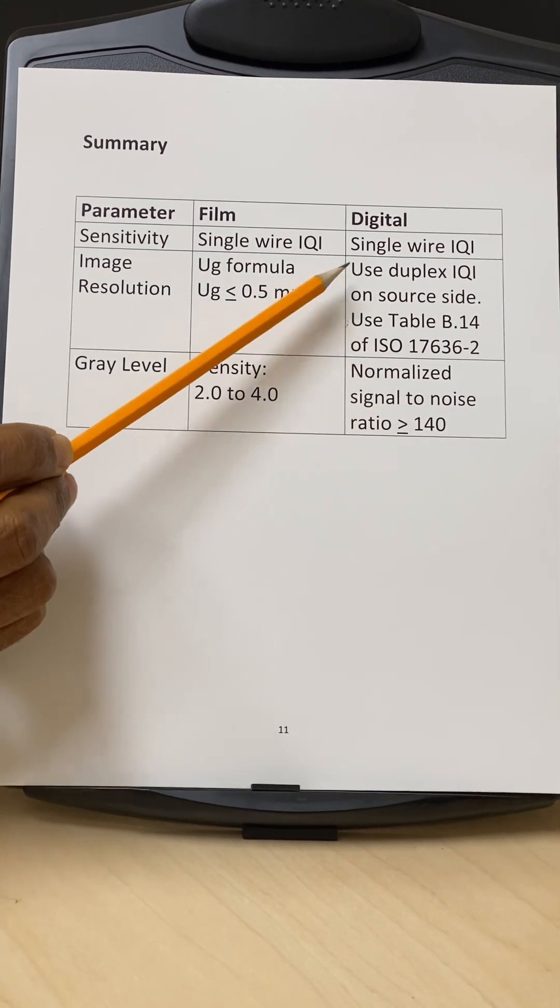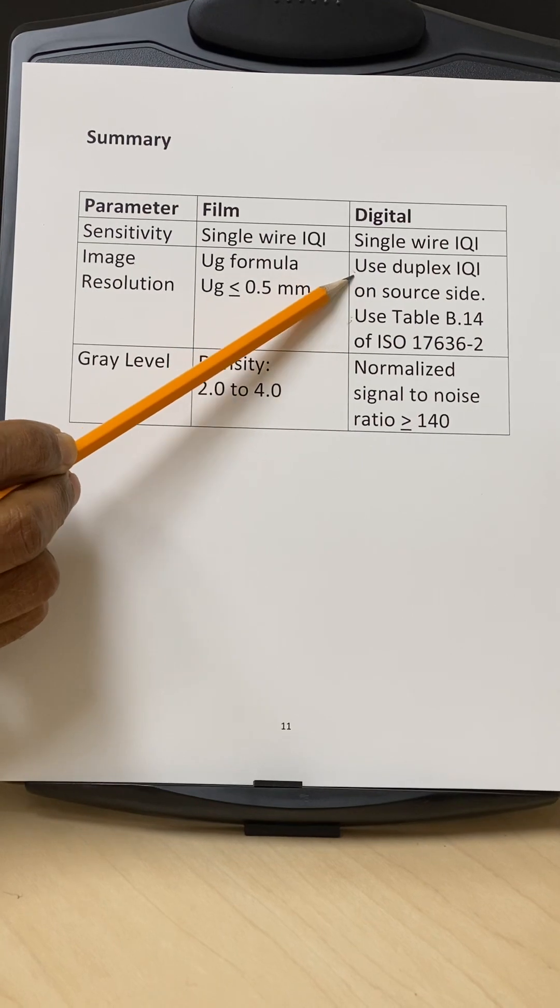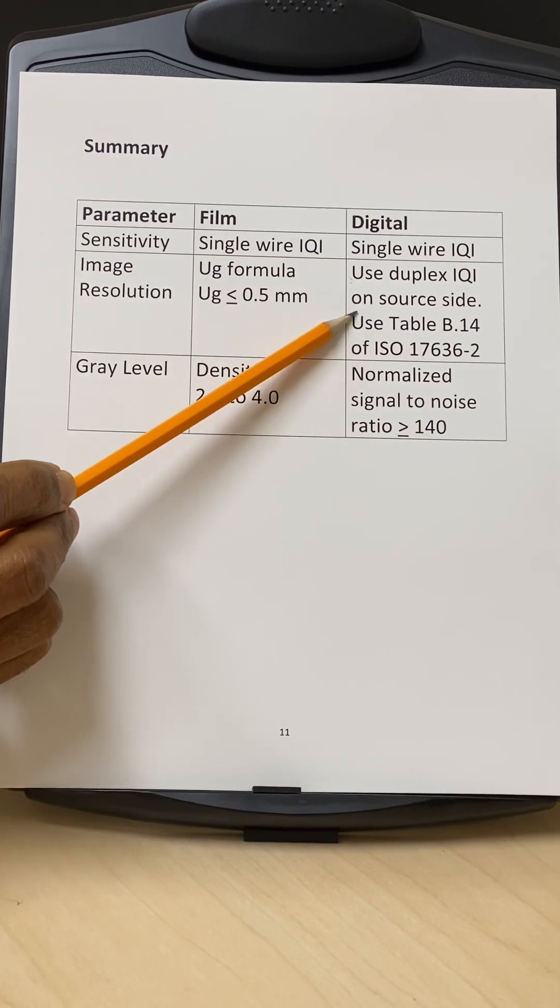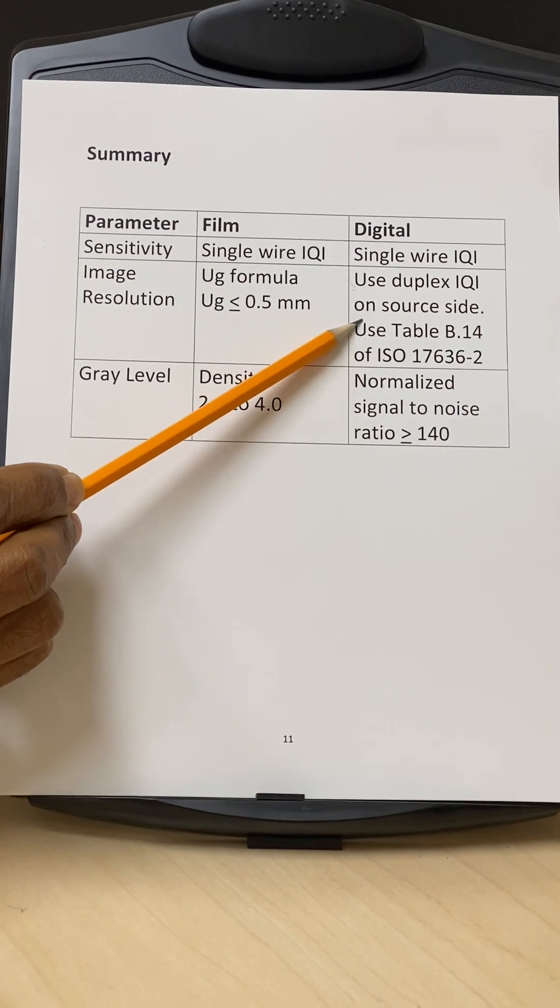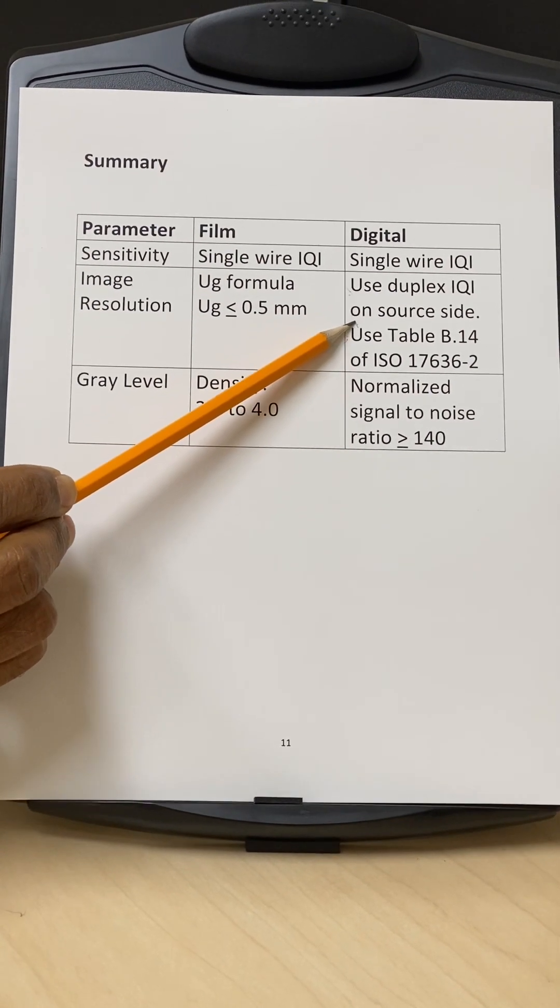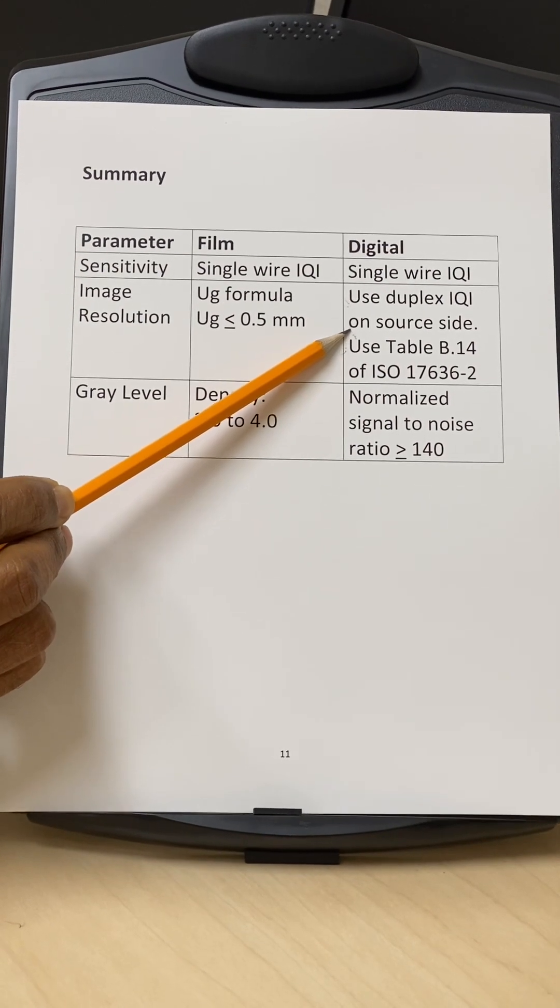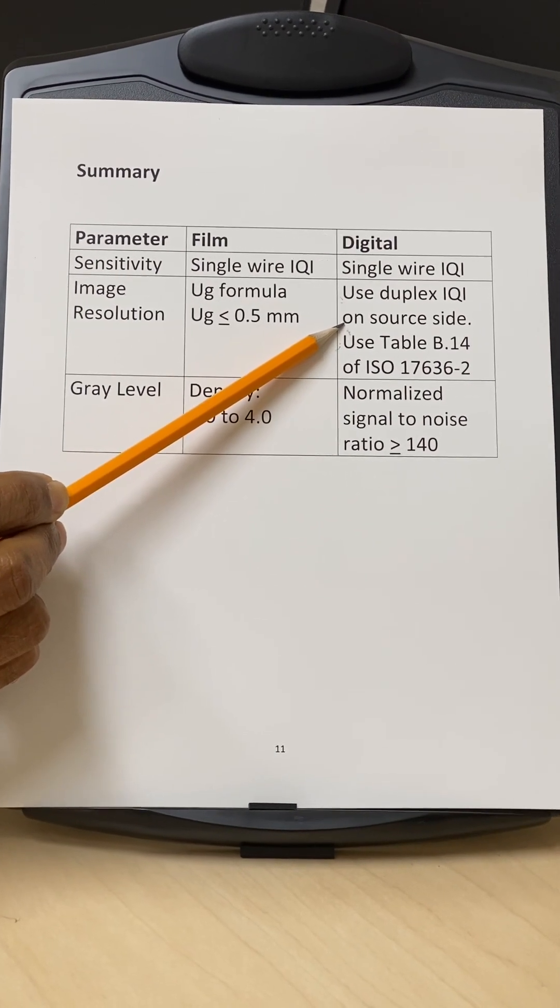And make sure the duplex IQI when you're taking this measurement is placed on the source side and not on the detector side. Because if you place this on the detector side, you're not measuring the image spatial resolution. You're actually measuring the detector resolution and that's not what we are looking for.